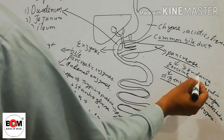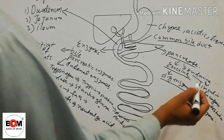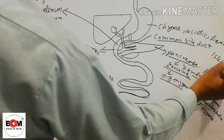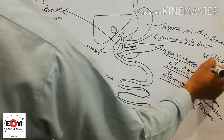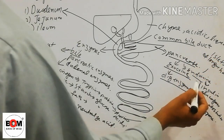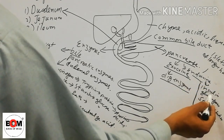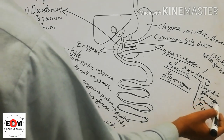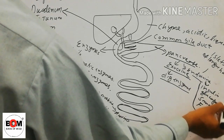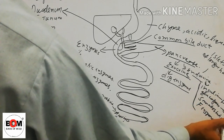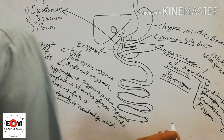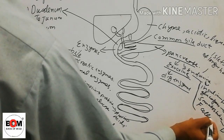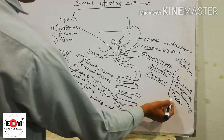The endocrine function of the pancreas is performed by cells called the islets of Langerhans. These cells release insulin, glucagon, somatostatin, and pancreatic polypeptide. Glucagon is released by alpha cells, insulin by beta cells, somatostatin by delta cells, and F cells release pancreatic polypeptide.